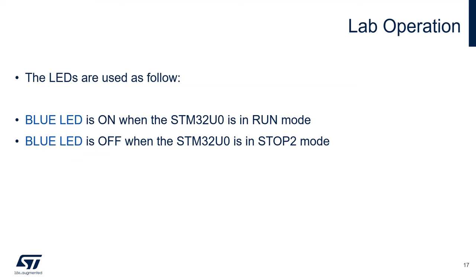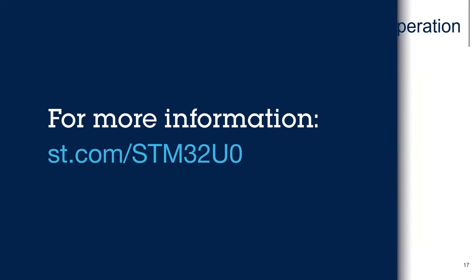Here's how the application operates on the board: it is indicated by the state of the blue LED. When the blue LED is on, the STM32U0 is in run mode. When the blue LED is off, we are in stop 2 mode. The microcontroller wakes up periodically every five seconds, then loops back — run mode for one second, stop 2 mode for five seconds, and so on.